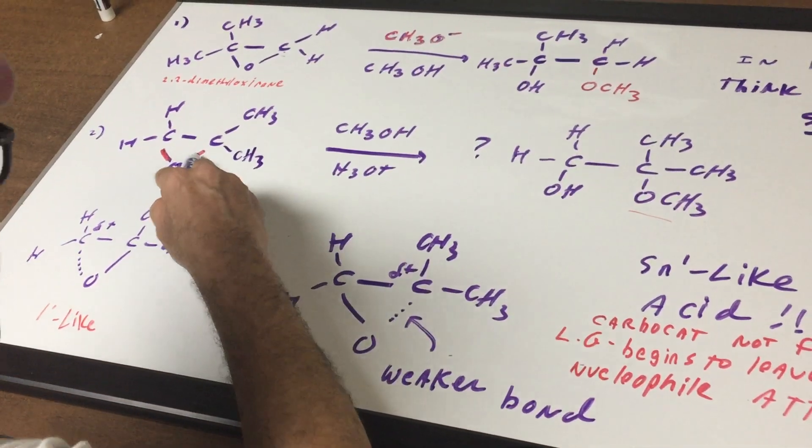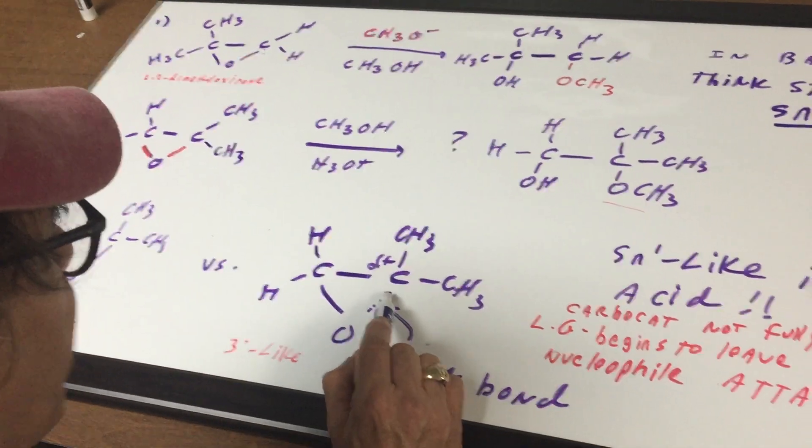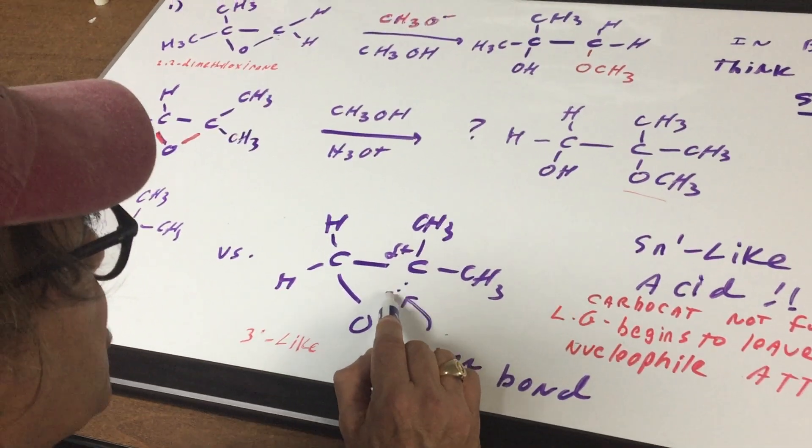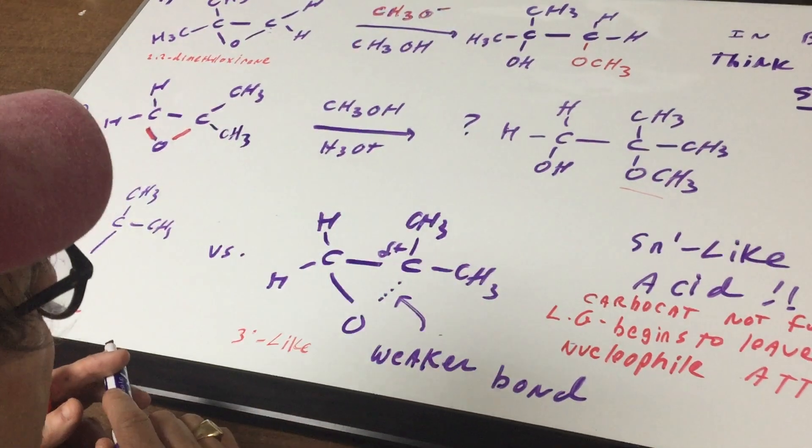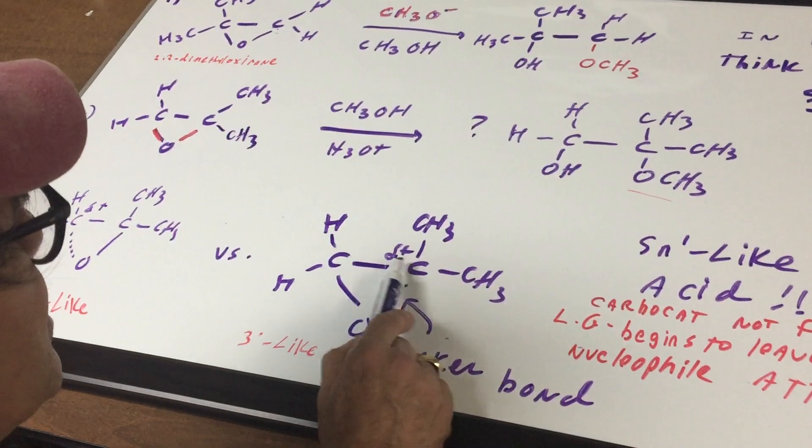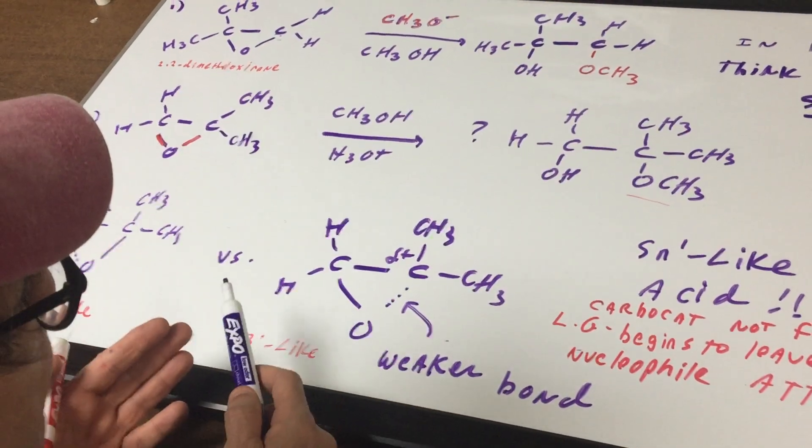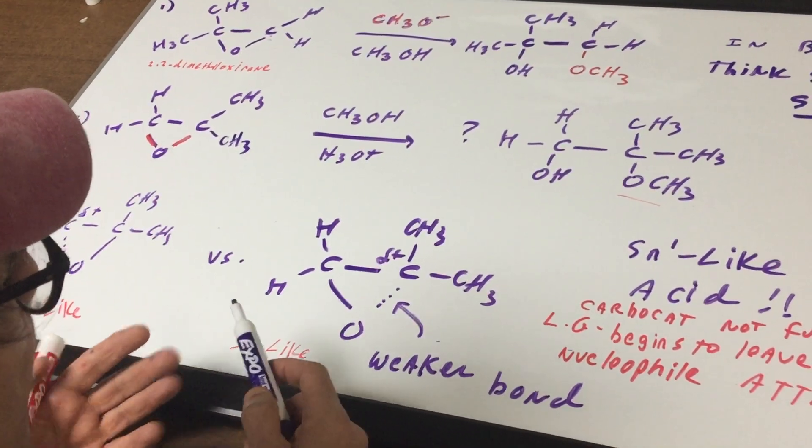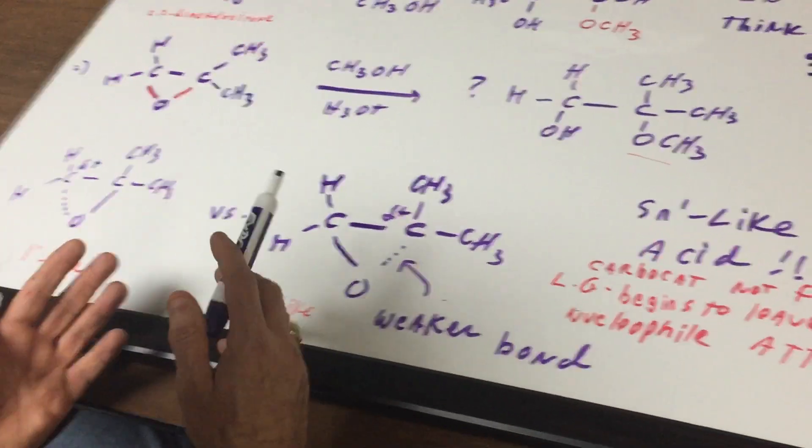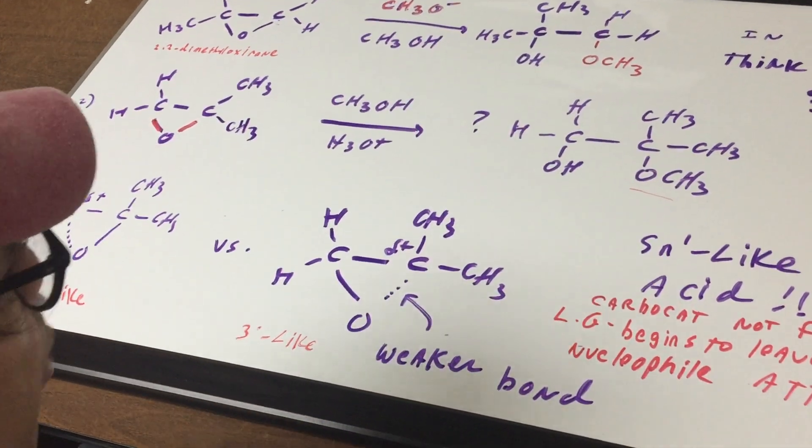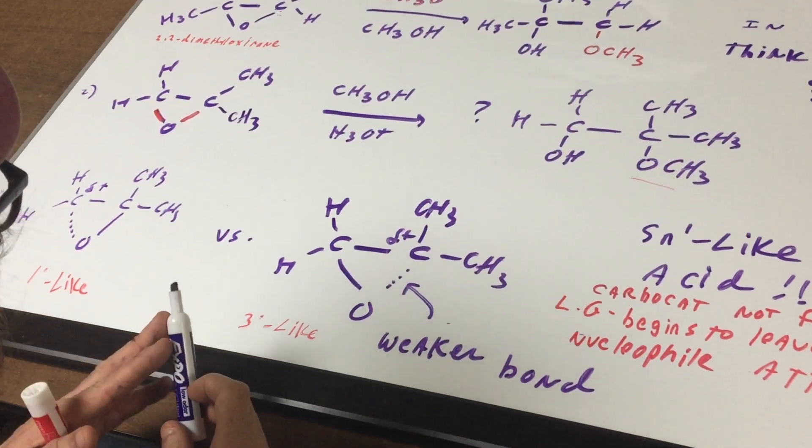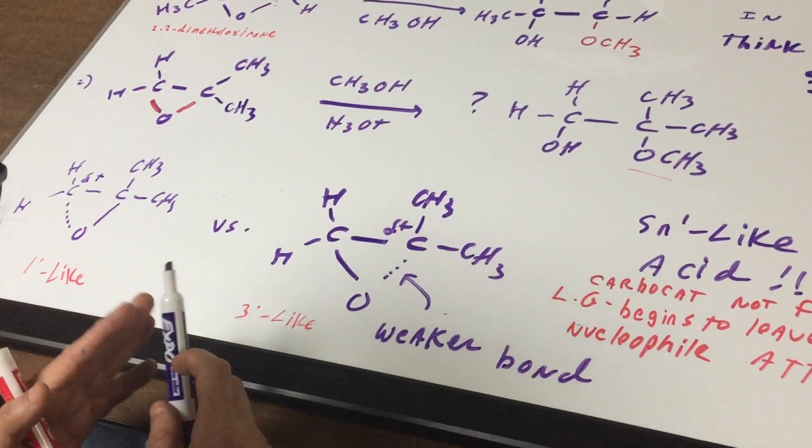Whereas if you go to this bond and you look at the transition state and that bond is breaking, this carbon is sort of like a tertiary. Now, since the tertiary is more stable, it's more likely to form. So that is reflected in the bond strength. This bond is weaker. So that's a weaker bond. So in other words, that's the bond that's going to be easier for you to break.